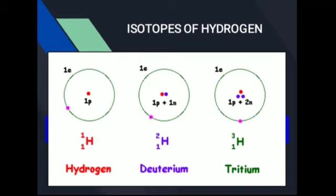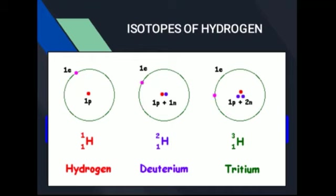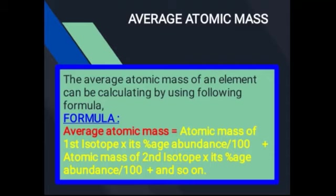اب ہم move کرتے ہیں اپنے main concept کی طرف — average atomic mass۔ آپ کے پاس تین قسم کے isotopes ہیں تو nature میں ان کے پائے جانے والی percentage different ہوگی۔ اس چیز کو ہم ایک example سے سمجھیں گے اور اس سے پہلے ہم formula discuss کریں گے۔